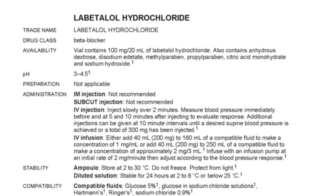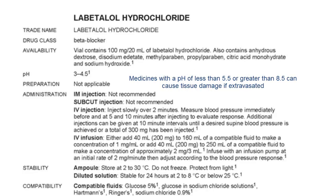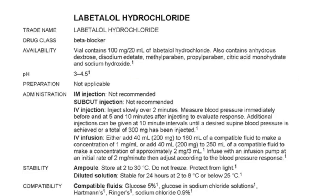'pH' is the pH of the medicine in the vial, or when dissolved, if we have the information. This is included because it gives an idea of how compatible it is with other solutions — solutions with very different pH values are less likely to be compatible. Medicines with a pH less than 5.5 or greater than 8.5 can cause tissue damage if extravasated. The pH of labetalol hydrochloride is 3 to 4.5, meaning it's acidic.